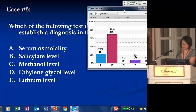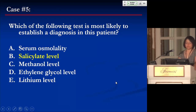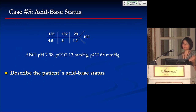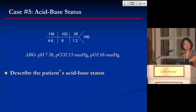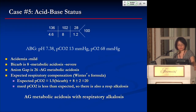Most of you said B — serum salicylate level — which is correct. The key is acid-base interpretation. This patient has an anion gap metabolic acidosis with respiratory alkalosis. He has mild acidemia, bicarb of 8, and a severe metabolic acidosis. Calculating the anion gap gives 26. Using Winter's formula — expected PCO2 = 1.5 × bicarb + 8 ± 2 — equals 20. The measured PCO2 of 13 is less than expected, so he also has a concomitant respiratory alkalosis.